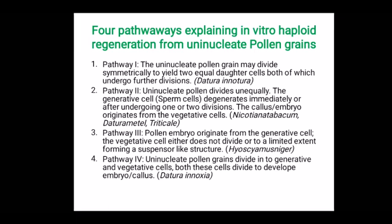In pathway three, the pollen embryo originates from the generative cells; the vegetative cell either does not divide or divides to a limited extent, forming a suspensor-like structure. The example is Hyoscyamus species. In pathway four, the uninucleate pollen grains divide into generative and vegetative cells, and both cells divide to develop an embryo or callus. This is observed in Datura innoxia.